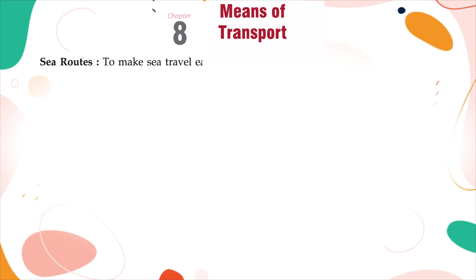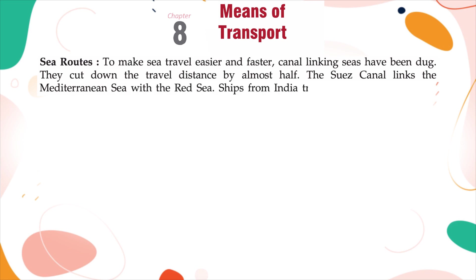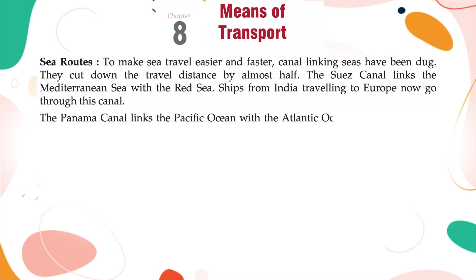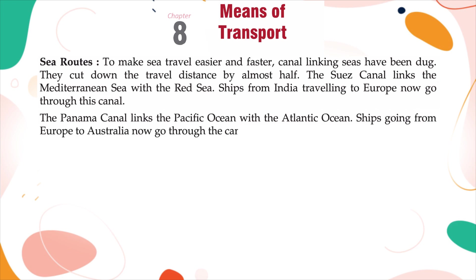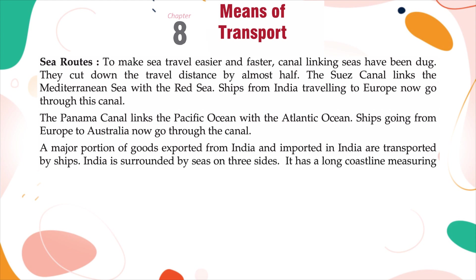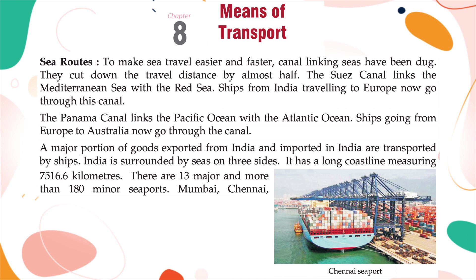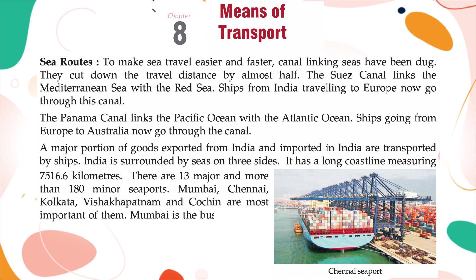Sea Routes: To make sea travel easier and faster, canals linking seas have been dug. They cut down the travel distance by almost half. The Suez Canal links the Mediterranean Sea with the Red Sea. Ships from India traveling to Europe now go through this canal. The Panama Canal links the Pacific Ocean with the Atlantic Ocean. Ships going from Europe to Australia now go through the canal. A major portion of goods exported from and imported into India are transported by ships. India is surrounded by seas on three sides. It has a long coastline measuring 7,516.6 kilometers. There are 13 major and more than 180 minor seaports. Mumbai, Chennai, Kolkata, Visakhapatnam, and Cochin are the most important. Mumbai is the busiest seaport in India.